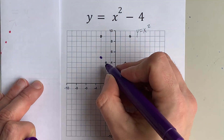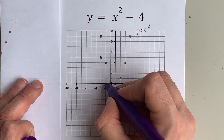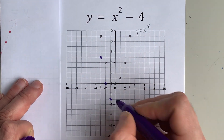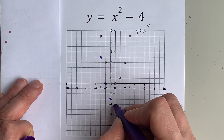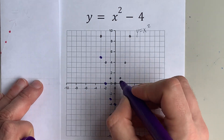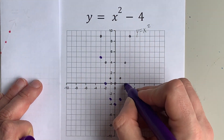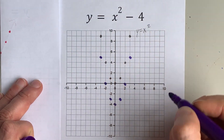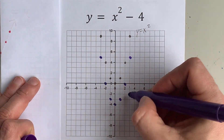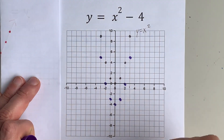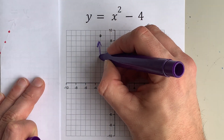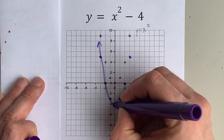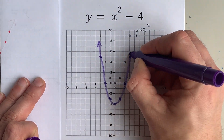Each point gets translated down 4 — this one goes down 4, and this one down 4, down 4, down 4. These marked points are the new points on my actual graph of x squared minus 4.